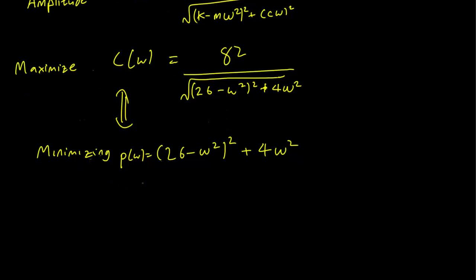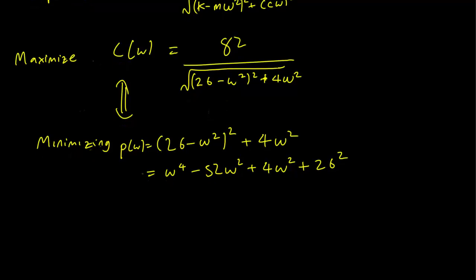Let's call this polynomial P(ω). Differentiating this polynomial is a lot easier than differentiating C. We can expand this out to get omega to the fourth minus 52 omega squared plus 4 omega squared plus 26 squared, which simplifies to omega to the fourth minus 48 omega squared plus 26 squared.